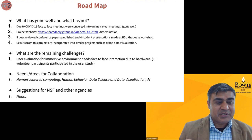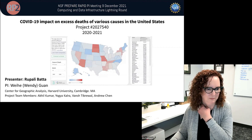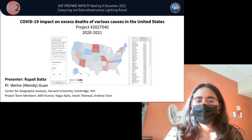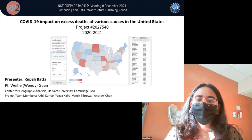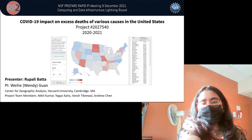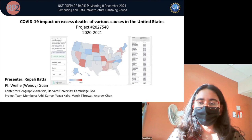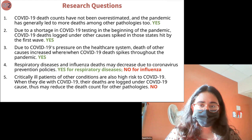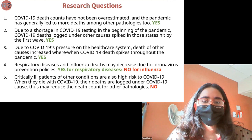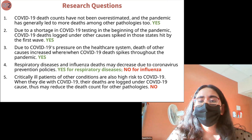My name is Rupali Batta and I'm presenting on behalf of our team at Harvard Center for Geographic Analysis. Our research is COVID-19's impact on excess deaths of various causes in the US. We analyzed 11 CDC causes of death to determine the changes the pandemic caused on diseases other than COVID. Our objective is to let data rather than the media present a holistic picture of COVID's impact on mortality. We came in with five hypothesis questions: three were supported, one was partially supported, and one was not supported.